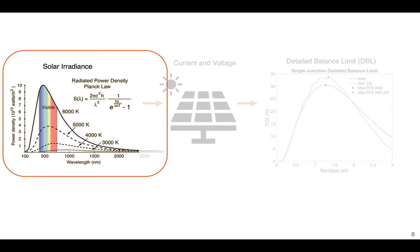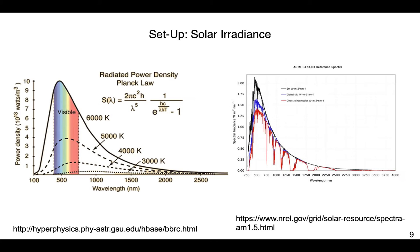Now we can review solar irradiance, which is important because it's what gets converted into electricity — we need sunlight to excite electrons and generate current. As a quick review, you can assume the sun is like a blackbody at 6,000 Kelvin, emitting a certain power density given by Planck's radiation law, which we use in the Detailed Balance model. Alternatively, we can use the experimentally measured AM1.5G spectra from the National Renewable Energy Laboratory, which accounts for absorption from atmospheric gases. For space, you'd use the AM0 spectra.